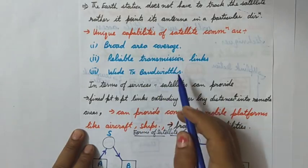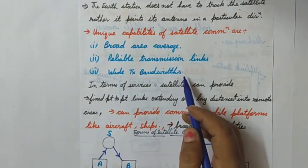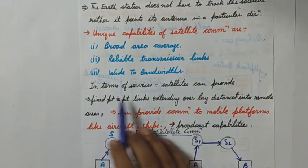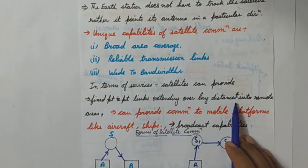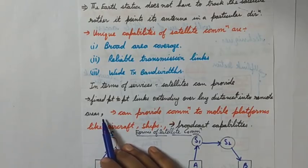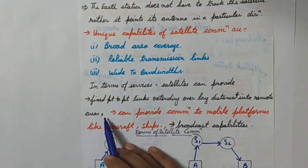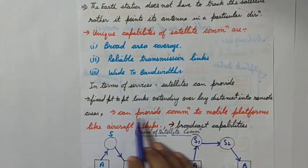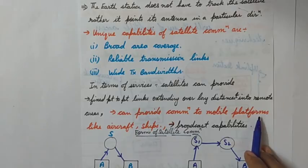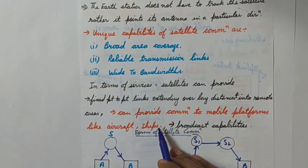The third capability is they provide wide transmission bandwidths — meaning they can send and receive many signals; video signals and high data rates are available with satellite communication. In terms of services, satellites can provide fixed point-to-point links extending over long distances and into remote areas where terrestrial installation is not complete or there are no phone connections.